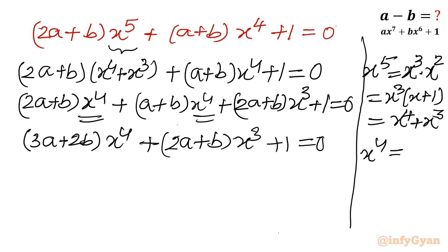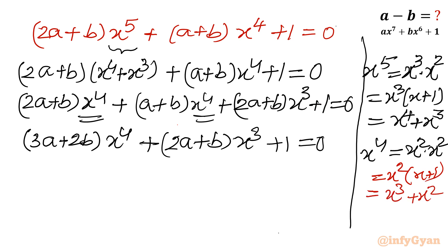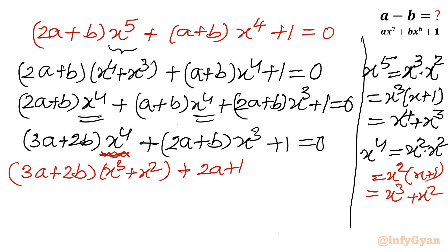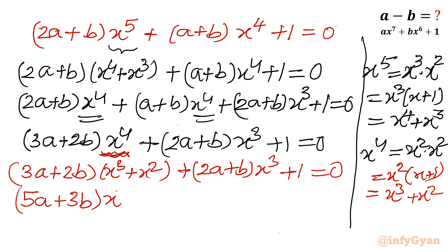Now x to the power 4 can be written as x squared times x squared. Replacing x squared with x plus 1 gives x cubed plus x squared. Substituting back, I write (3a plus 2b) times (x cubed plus x squared) plus (2a plus b) times x cubed plus 1 equal to 0. Collecting x cubed terms gives (5a plus 3b) times x cubed plus (3a plus 2b) times x squared plus 1 equal to 0.